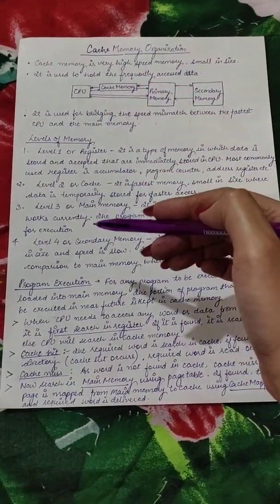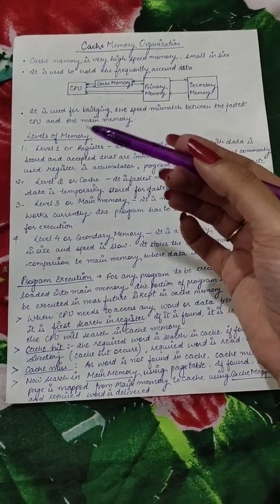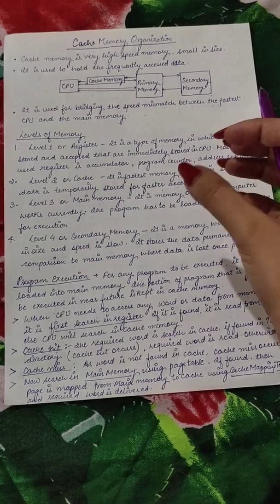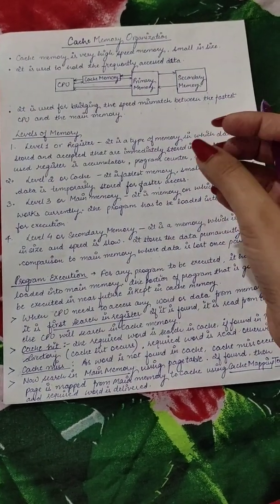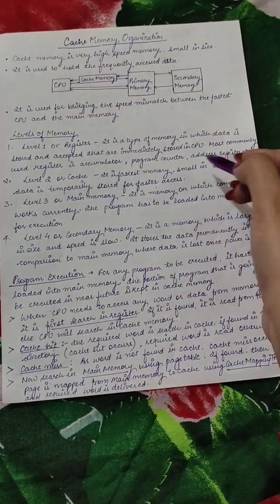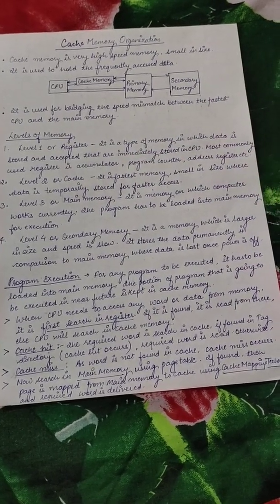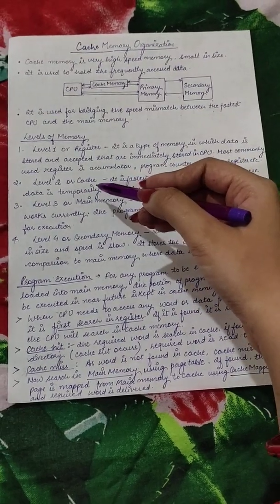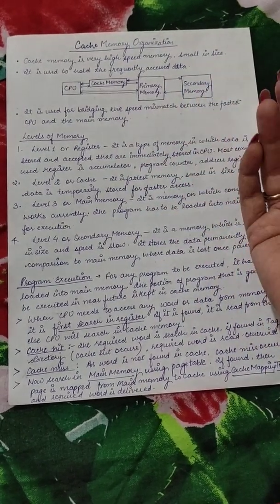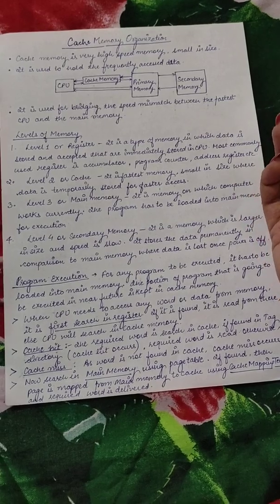At the first level of memory hierarchy, we have registers — a group of flip-flops that store data immediately accessed by the CPU. Examples include the accumulator, program counter, and address registers. The program counter stores the address of the next instruction to be executed. At level 2, we have cache memory — the fastest memory, smaller in size, which temporarily stores copies of frequently accessed data. Then we have main memory, where we store the entire program currently being worked on.